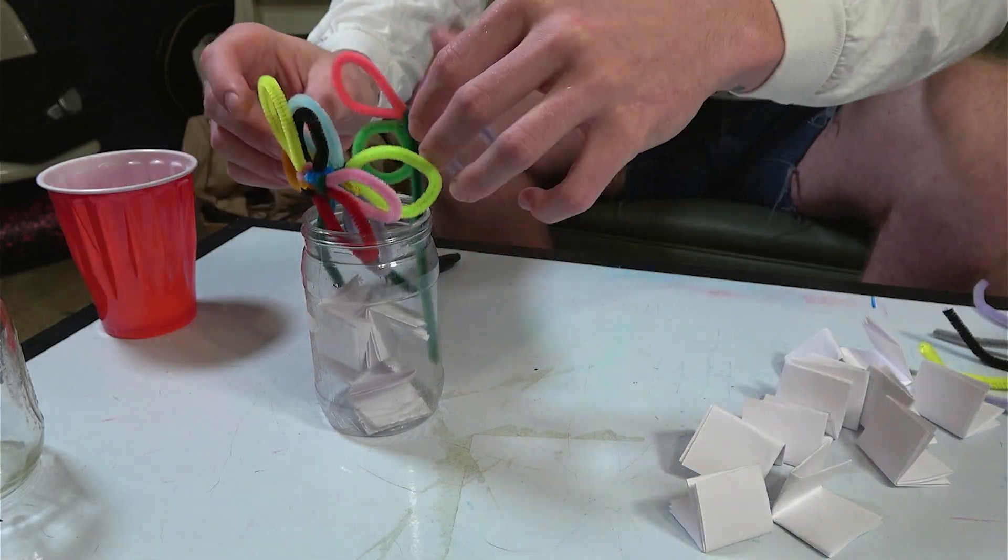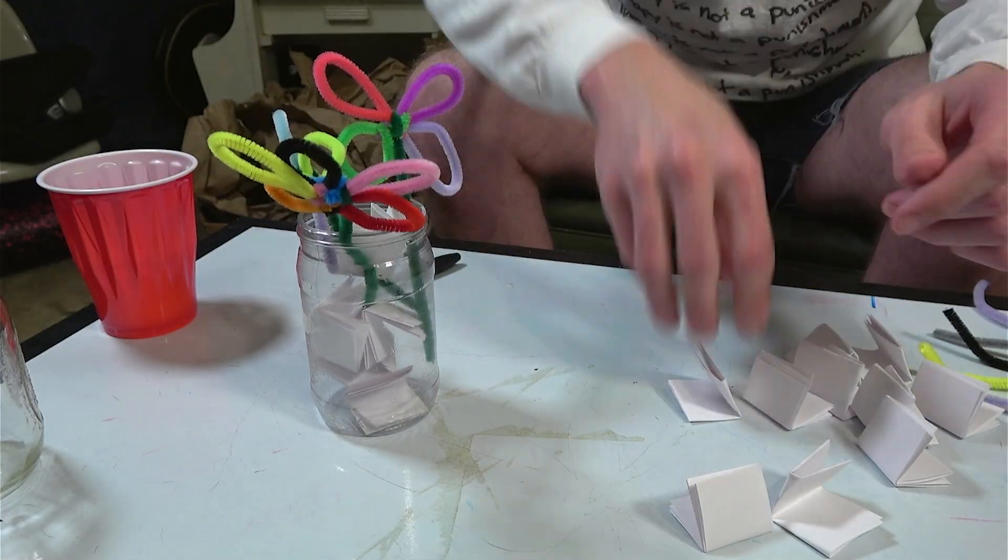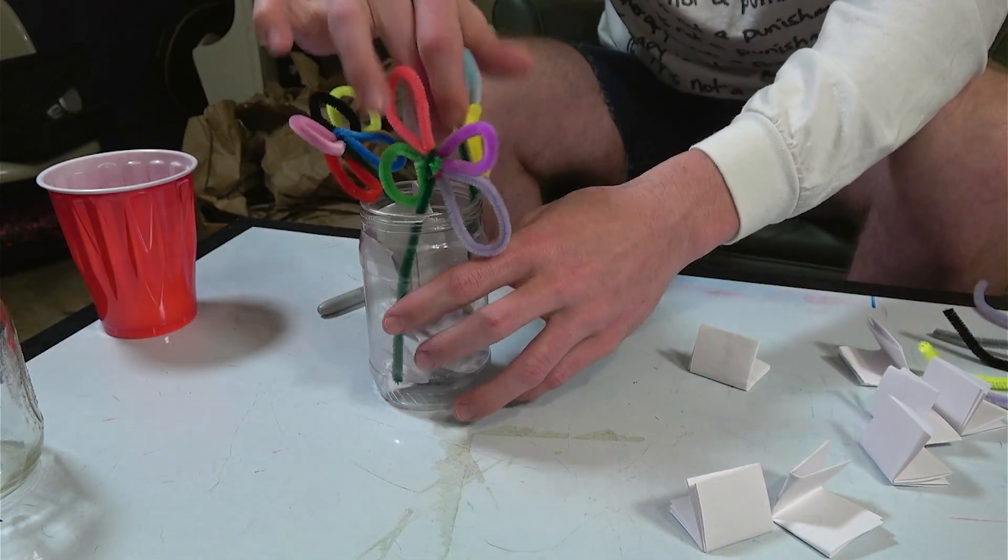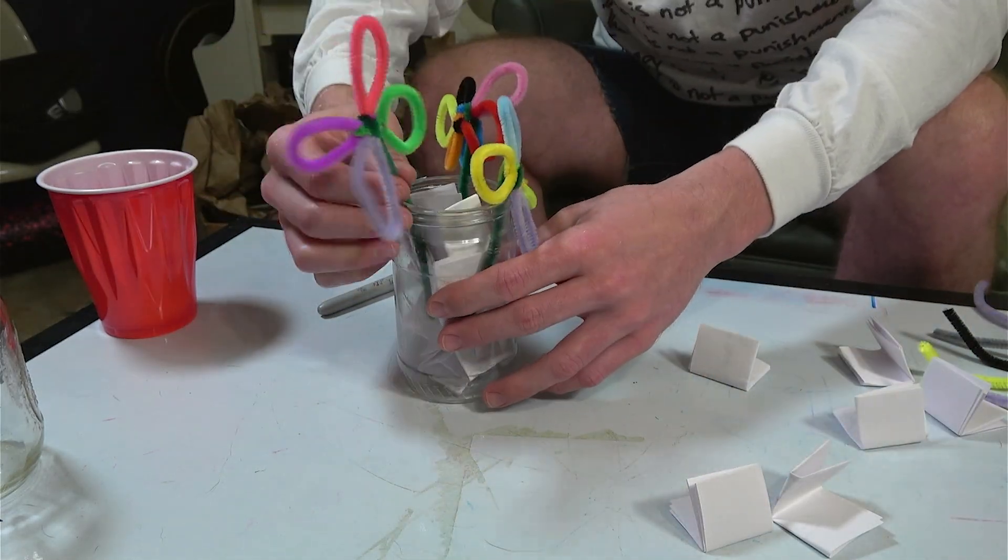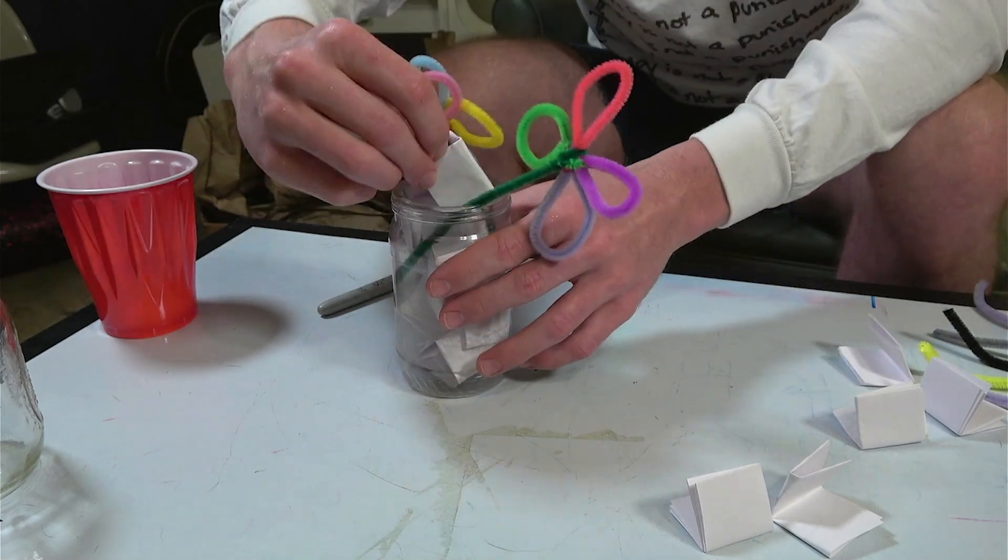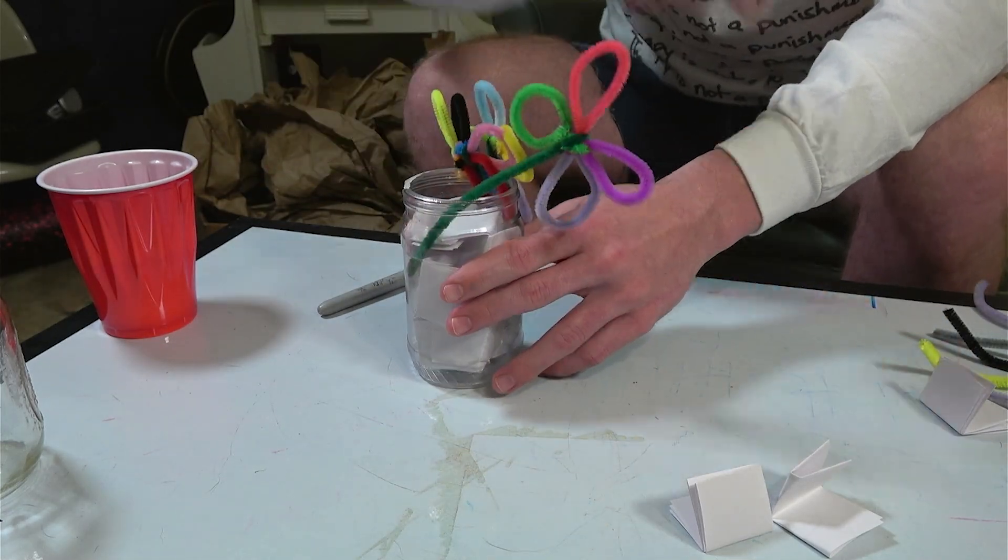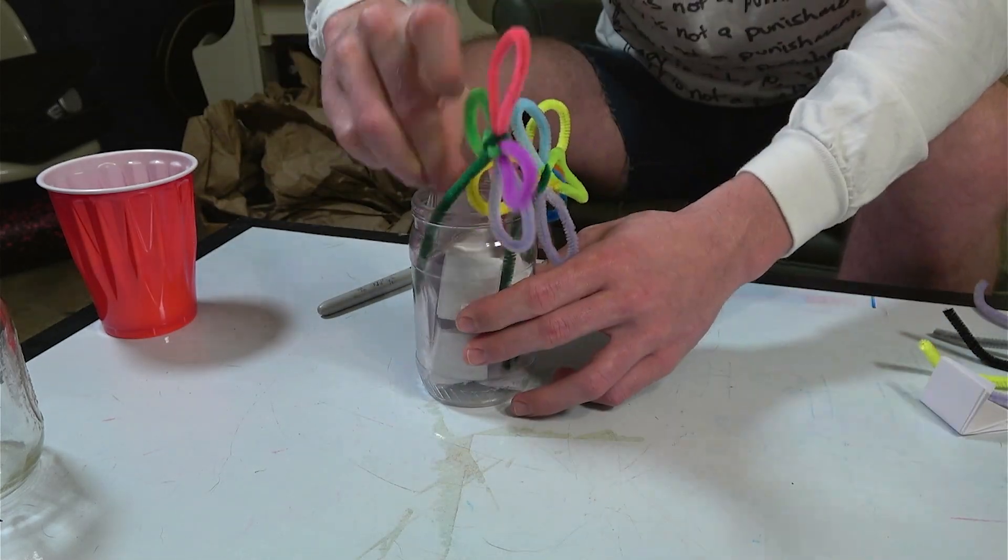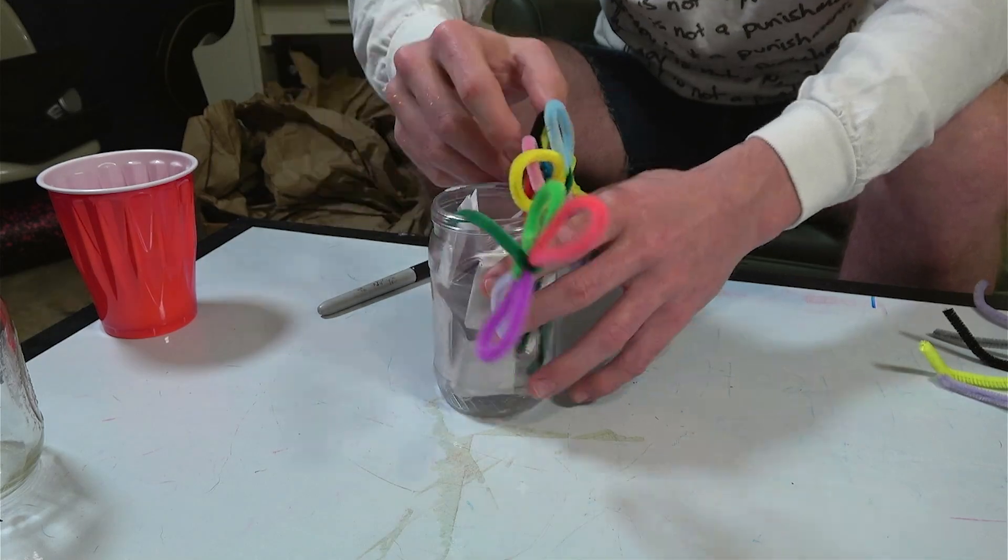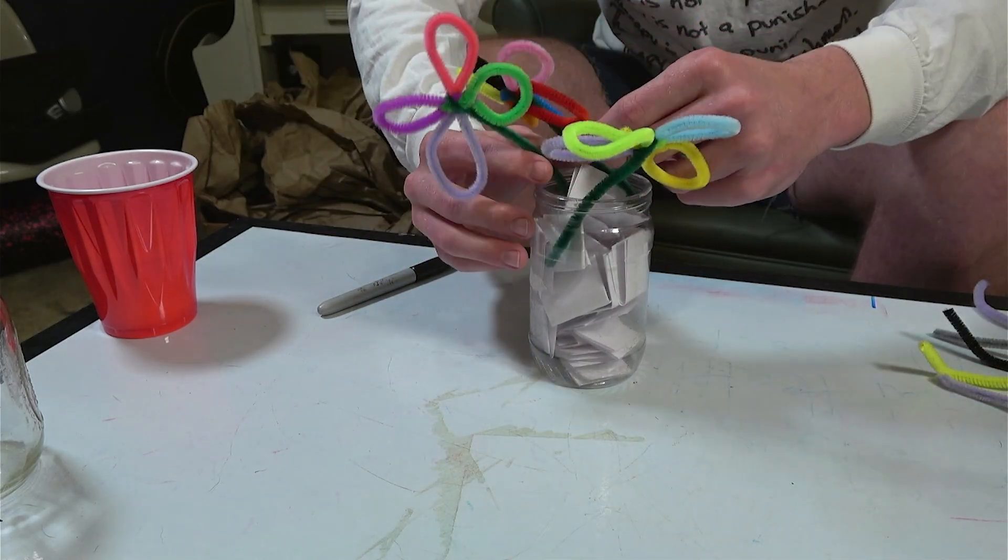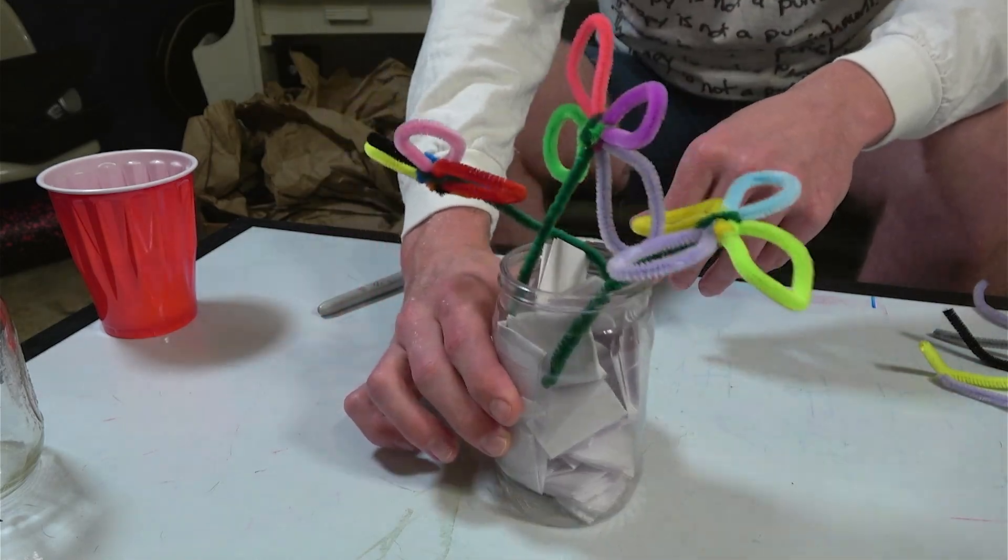You can see the flowers start off looking pretty pitiful before there's some gratitudes added to them. But over time as you add in more things that you're grateful for, the flowers begin to almost bloom and grow out of the jar. This can show kids that gratitude is one way to grow.